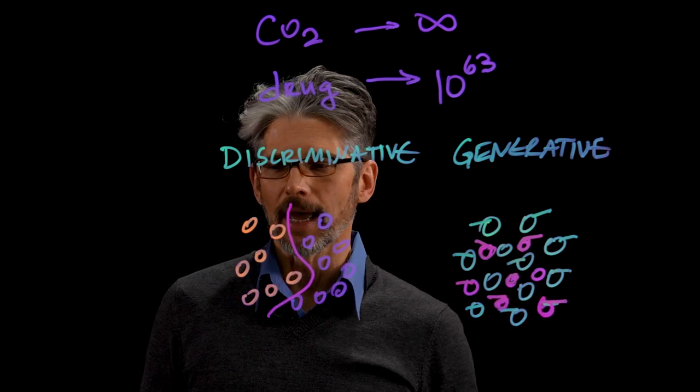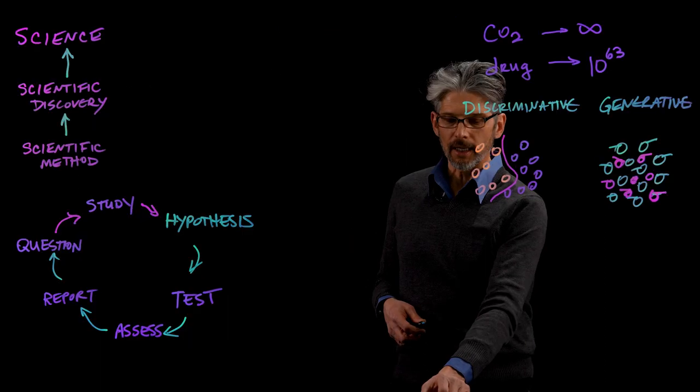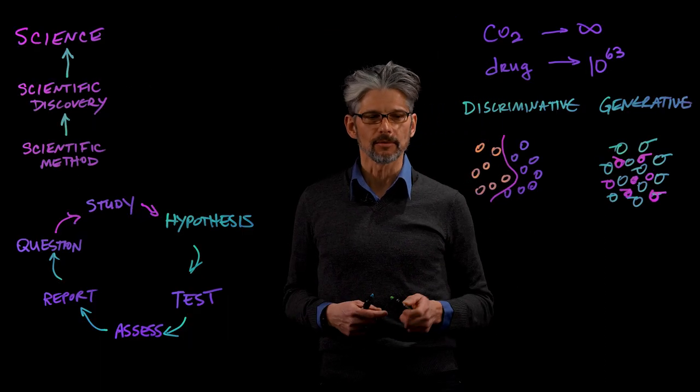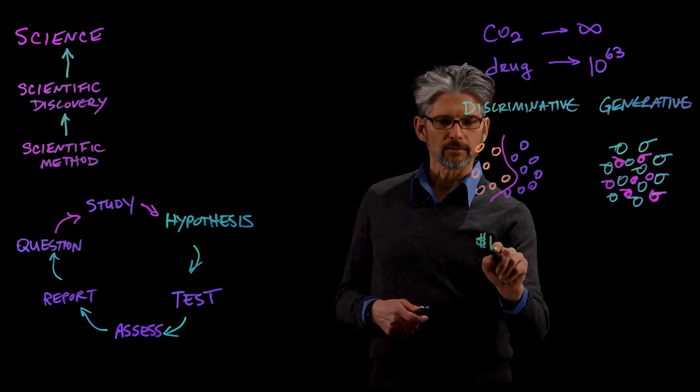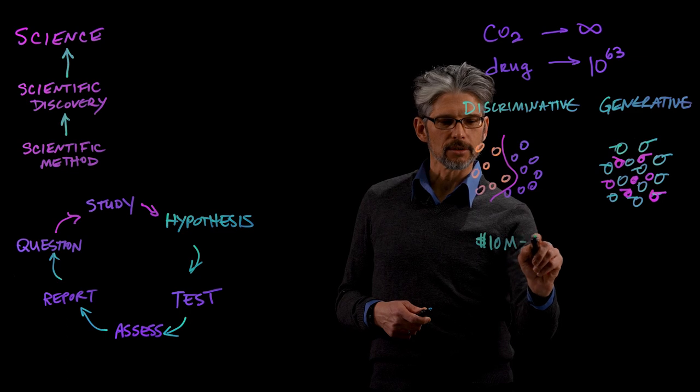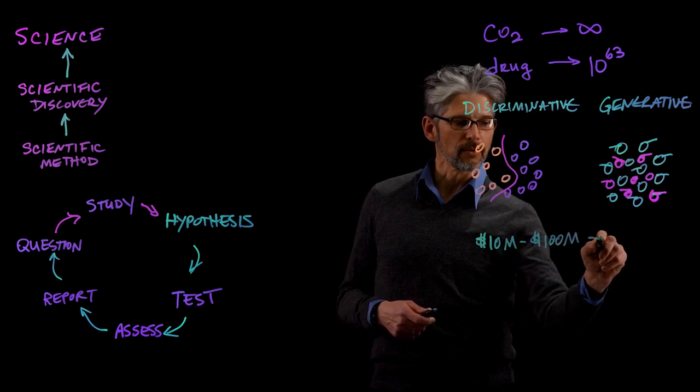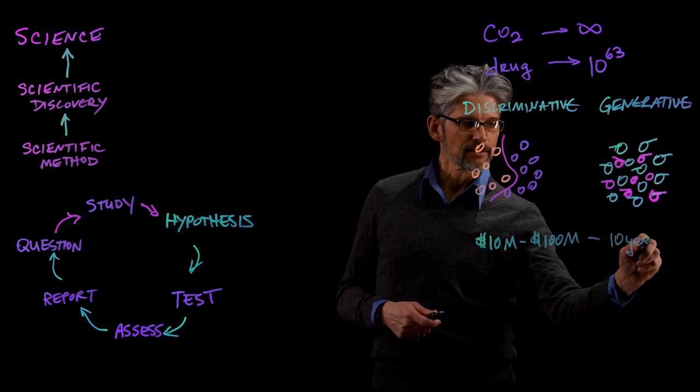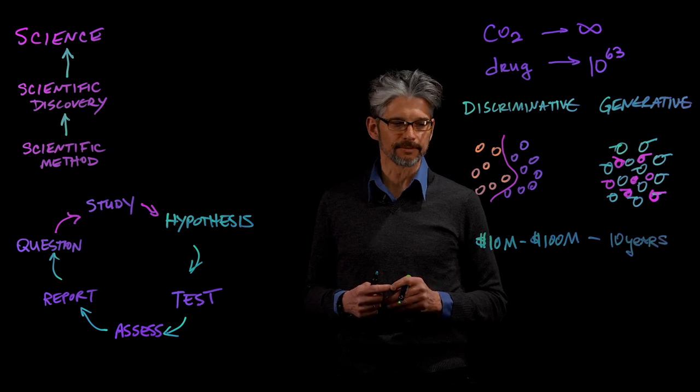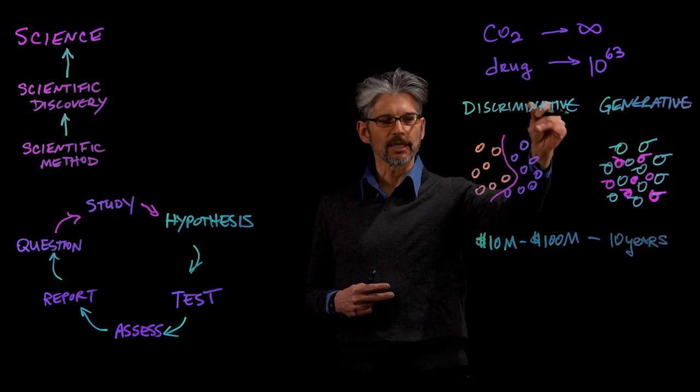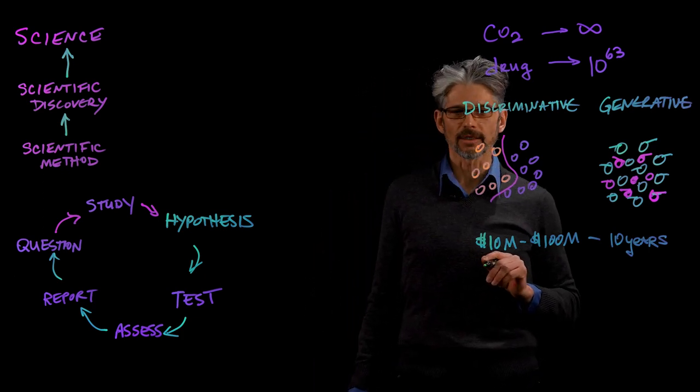If we come back to the application in materials discovery, it can cost between 10 million to 100 million dollars and take up to 10 years to design and discover a new material. Generative models can greatly shorten the time that it takes and reduce the cost.